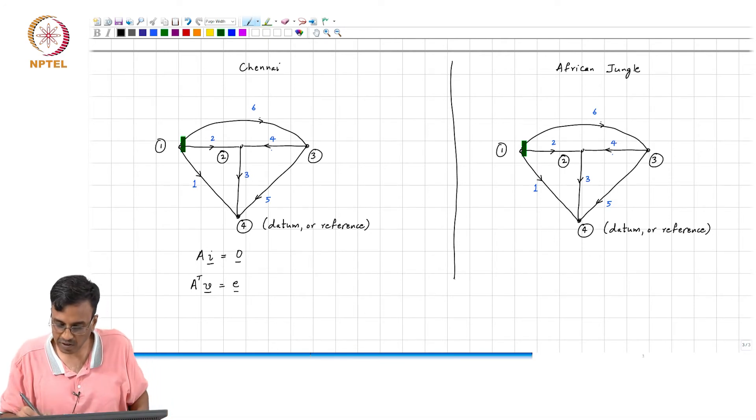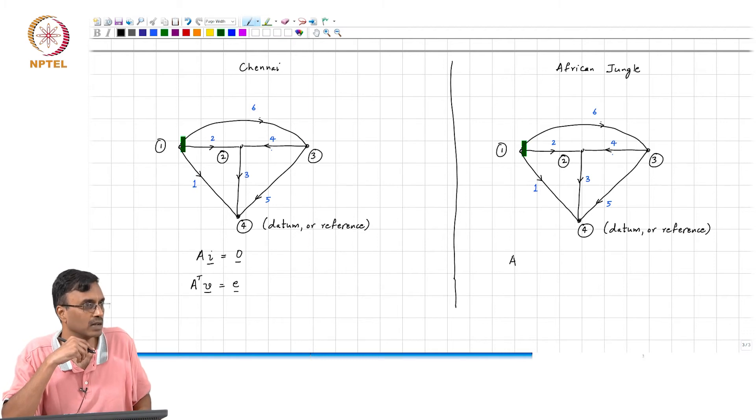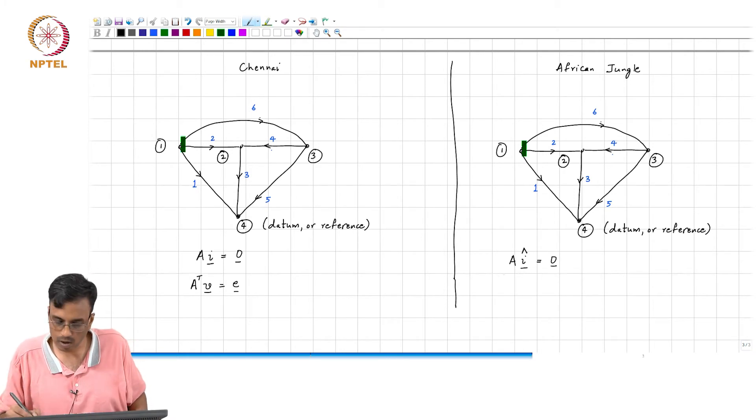And this is of course, another network. So, apart from the incidence matrix being the same, there is no other relationship between these 2 networks. And this is basically, let us call these branch currents I hat. And therefore, A times I hat equal to 0.